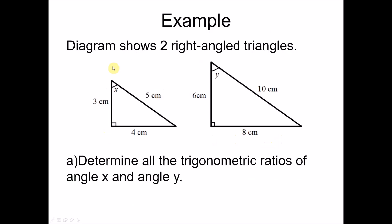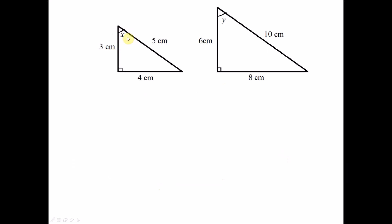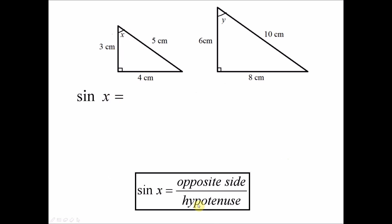Now for example questions: a diagram shows two right angle triangles with all lengths given. We determine all trigonometric ratios of angle X and angle Y. Sine X equals opposite over hypotenuse = 4 over 5. Sine Y equals opposite over hypotenuse = 8 over 10, which simplifies to 4 over 5.